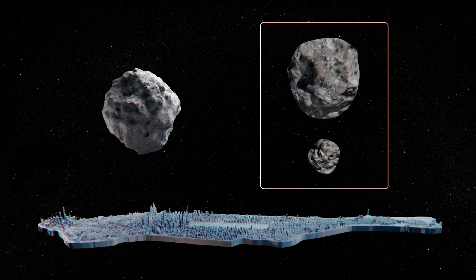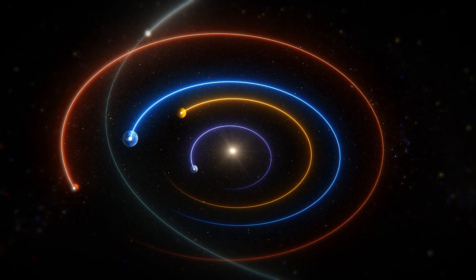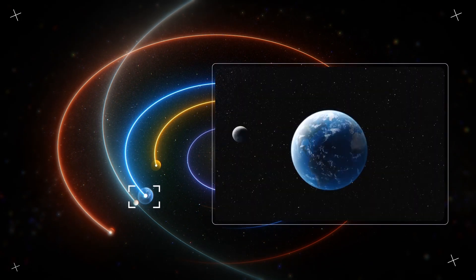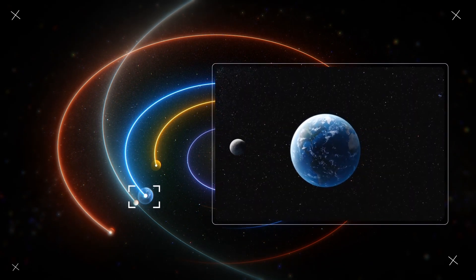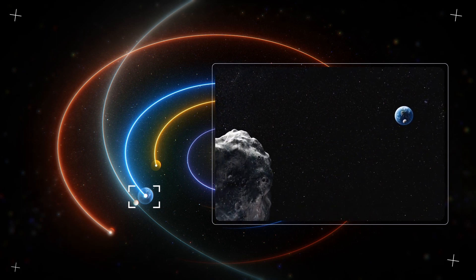That's roughly the size of midtown Manhattan. It takes asteroid 1998 OR2 three years and eight months to orbit our Sun. Its journey takes it near Jupiter at its furthest point, but just outside Earth's farthest distance from the Sun on its closest approach.